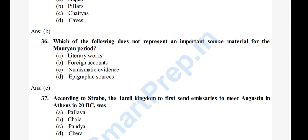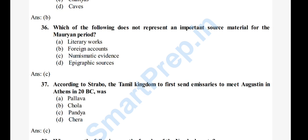Question 37: According to Strabo, which Tamil Kingdom first sent emissaries to meet Augustus in Athens in 20 BC? Options: A) Pallava, B) Chola, C) Pandya, D) Chera. The right answer is option C, Pandya.